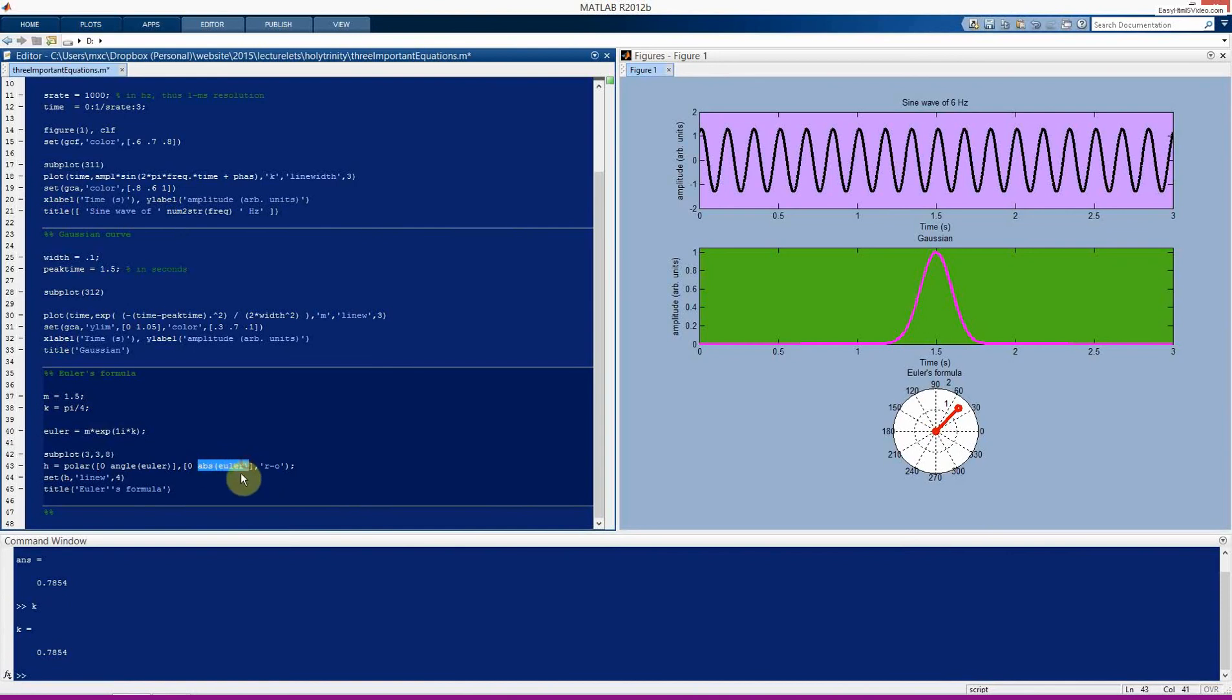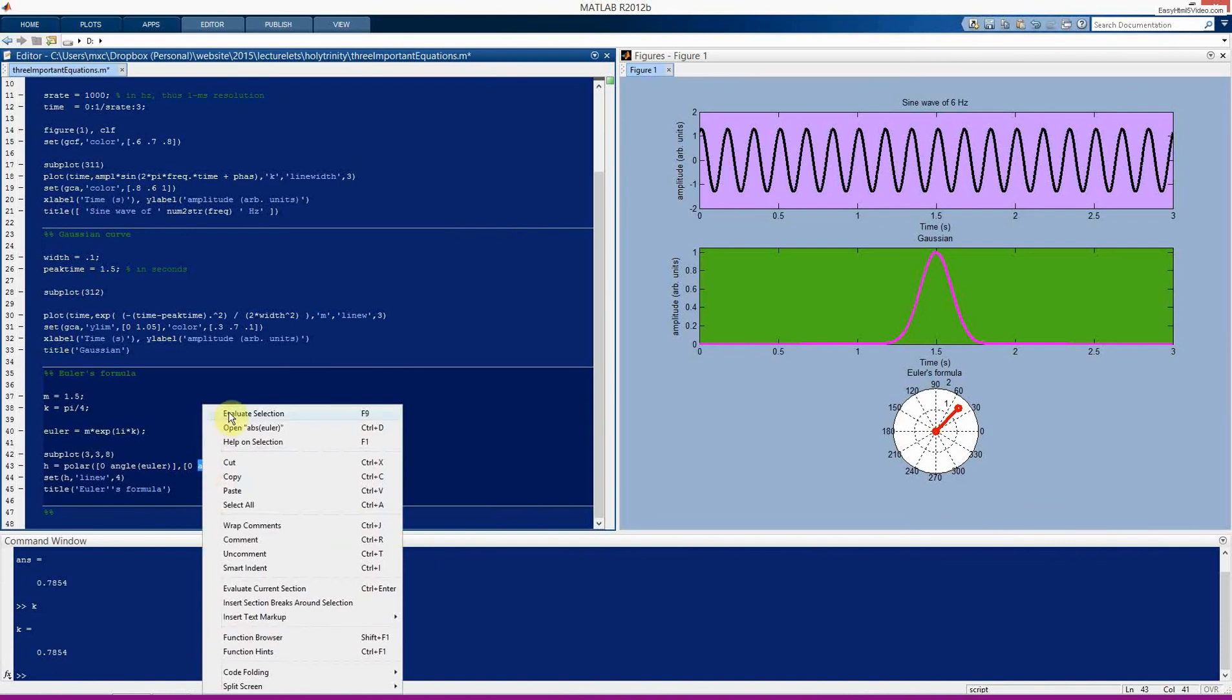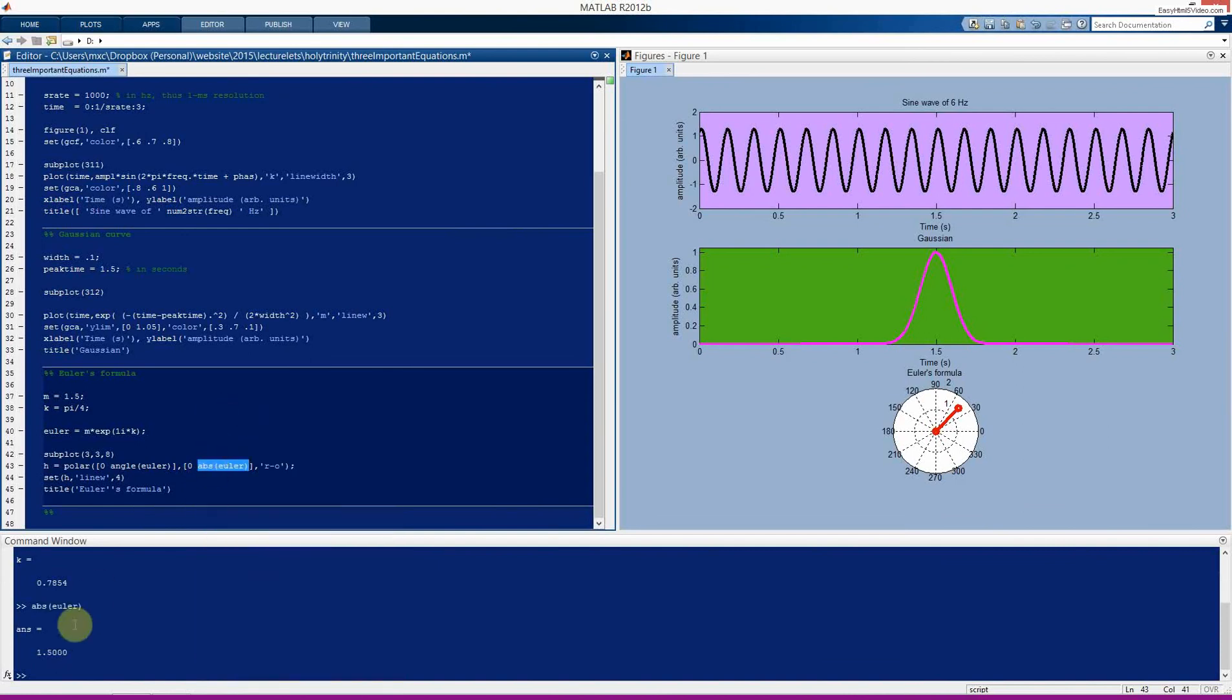And the magnitude, which is implemented here as abs. Again, we will discuss this at great depth in a future video. This is actually just the m variable that I defined here. So this was kind of an unnecessary step. But I did want you to see what Euler's formula looks like in MATLAB code. And so that's why that step is in here.